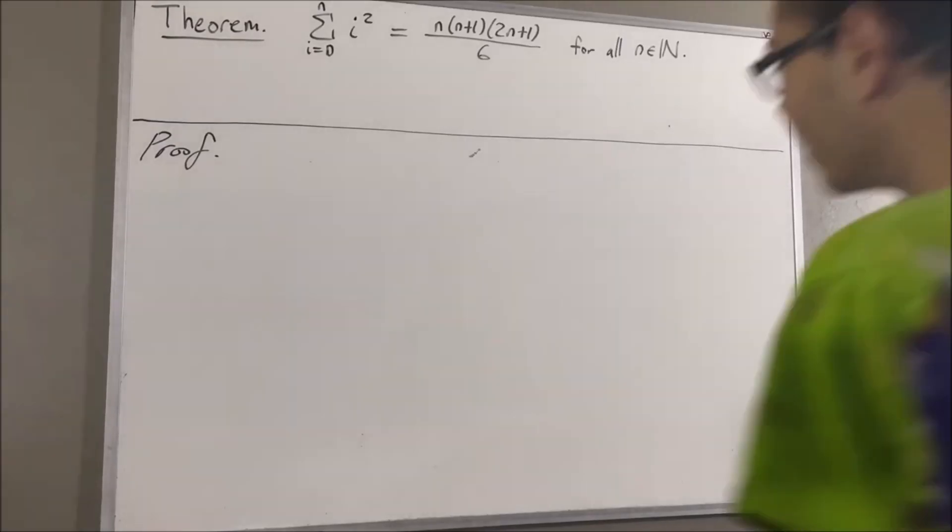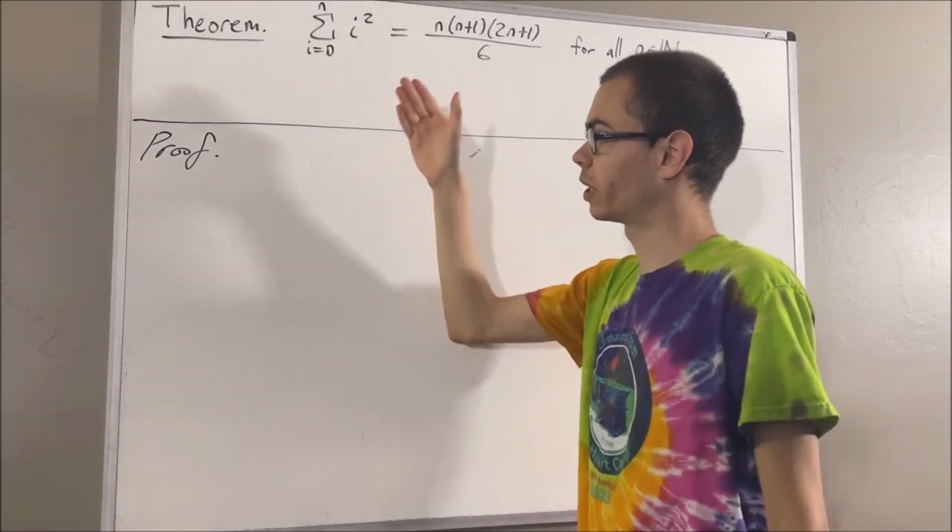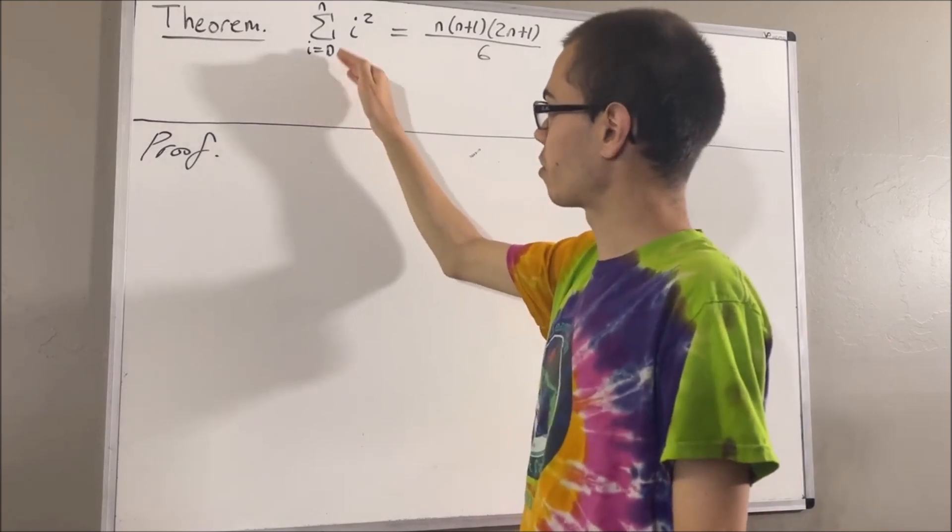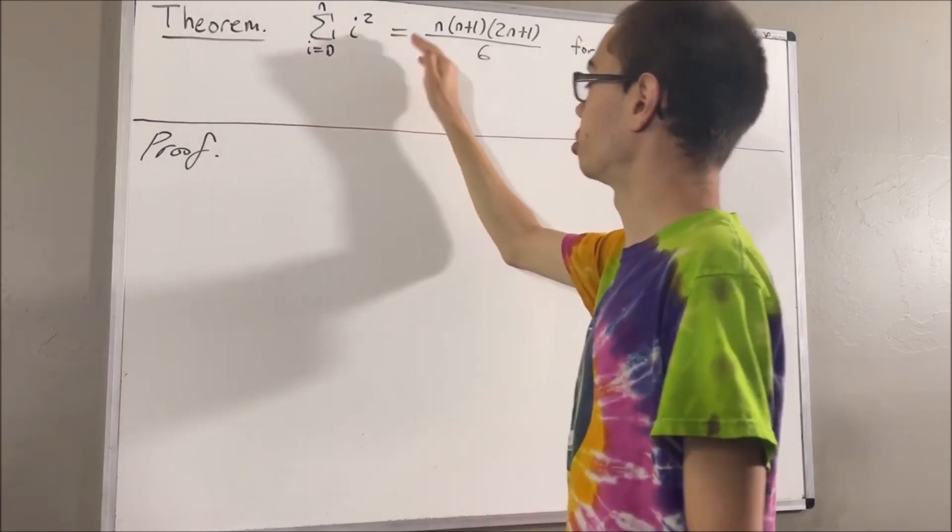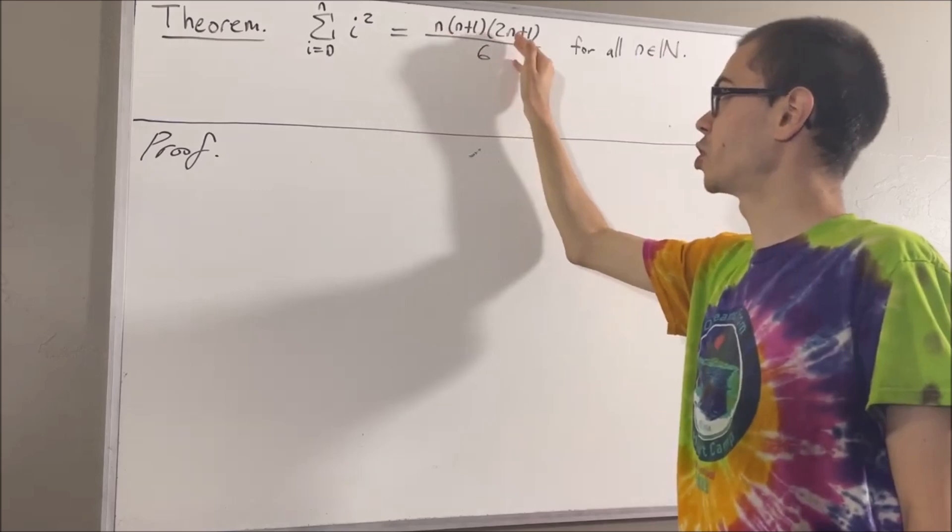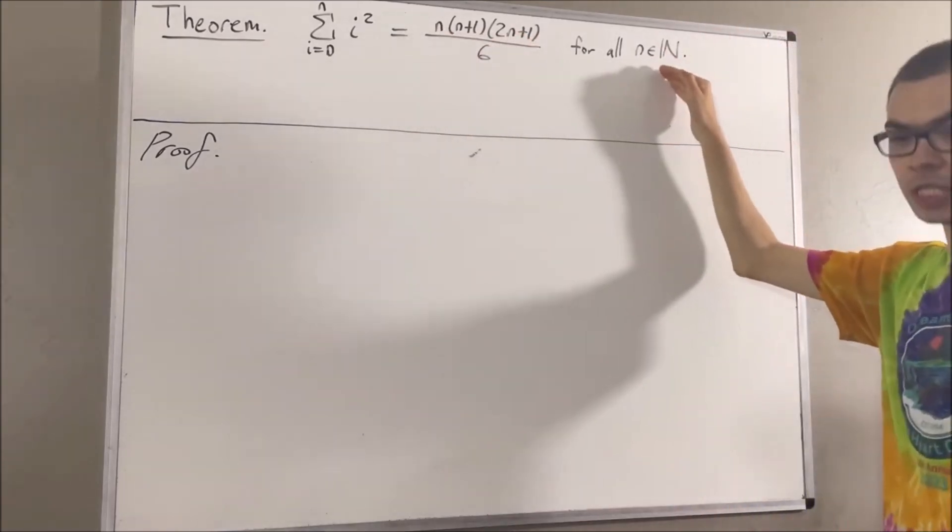Hello! In this video, we are going to prove the following theorem. The sum from i equals zero to n of i squared is equal to n times n plus one times two n plus one over six for all natural numbers n.